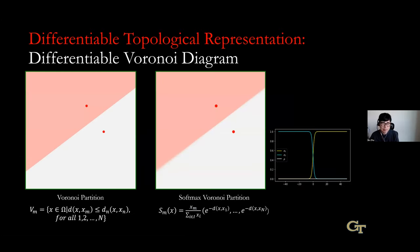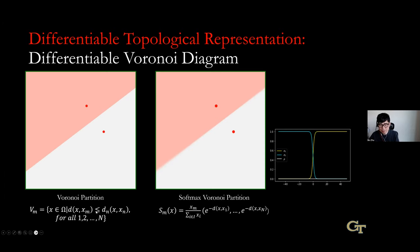The Voronoi diagram is a classical geometric data structure giving interfaces between two sites based on which is closest. It's a discrete representation — telling you which region a point belongs to based on distance. We convert this to a differentiable continuous representation by changing the max function to a soft-max function, a very typical practice in the machine learning community. Using soft-max, we get a continuous representation where every point has a probability of belonging to region A or B based on distance — not a hard if-else statement.